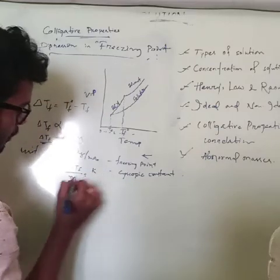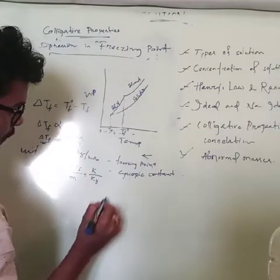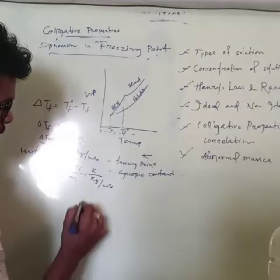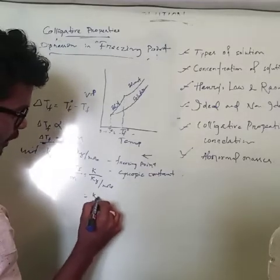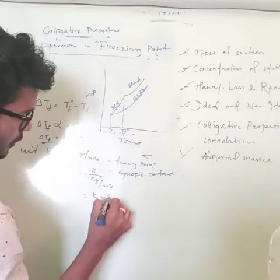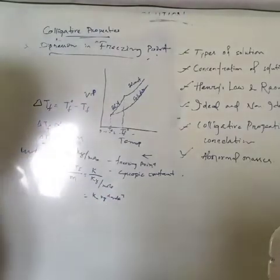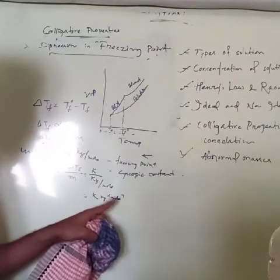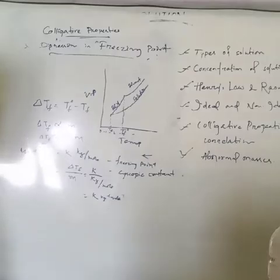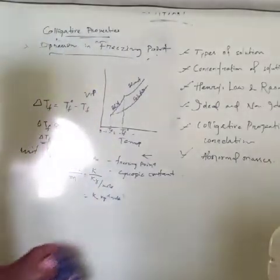ΔTf equals Kf divided by molality M, giving units of Kelvin·kg per mol. Substituting this in, you will get the correct unit for Kf.